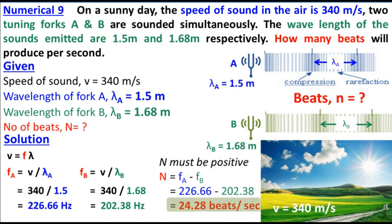Frequency of B must be V divided by lambda B. So we can see approximately 24 beats per second.